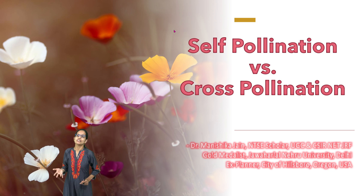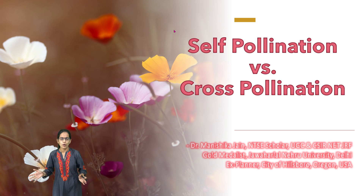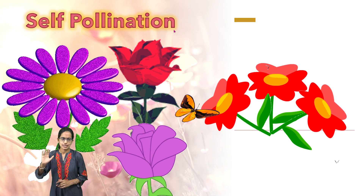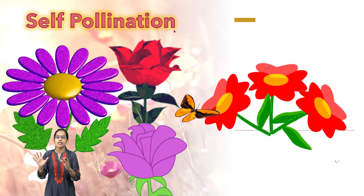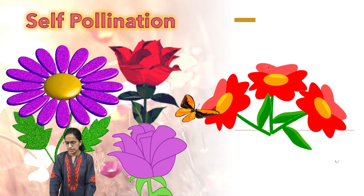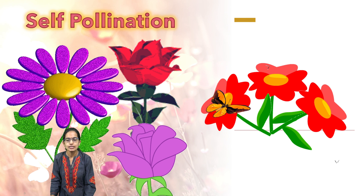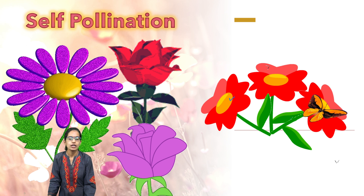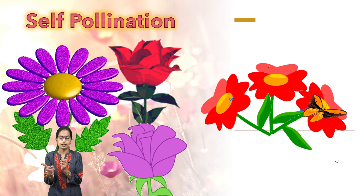Self-pollination versus cross-pollination — what is the difference? To begin with, let's first understand self-pollination. Self-pollination is a process through which pollination occurs either in the same flower, as you can see, or another flower of the same plant.